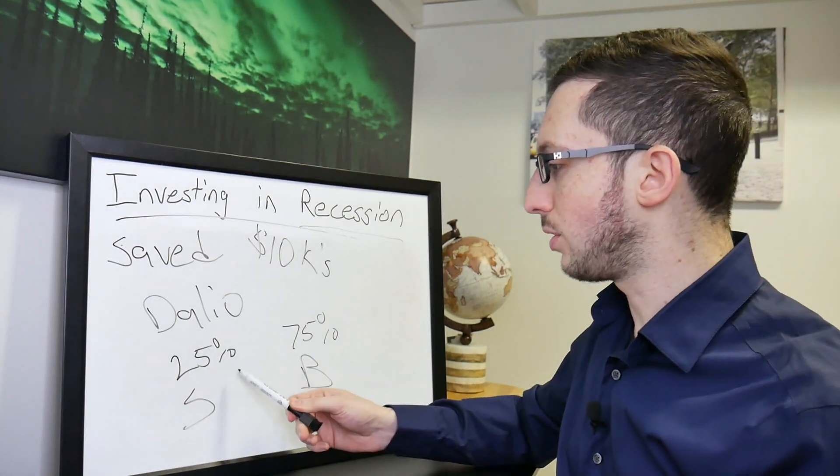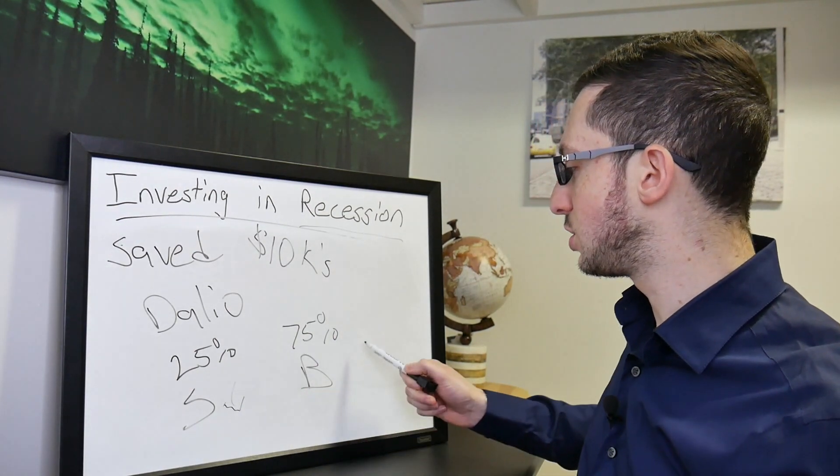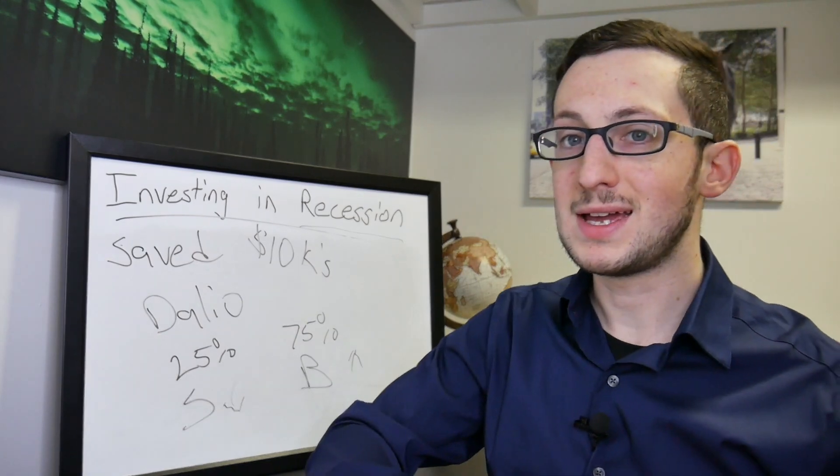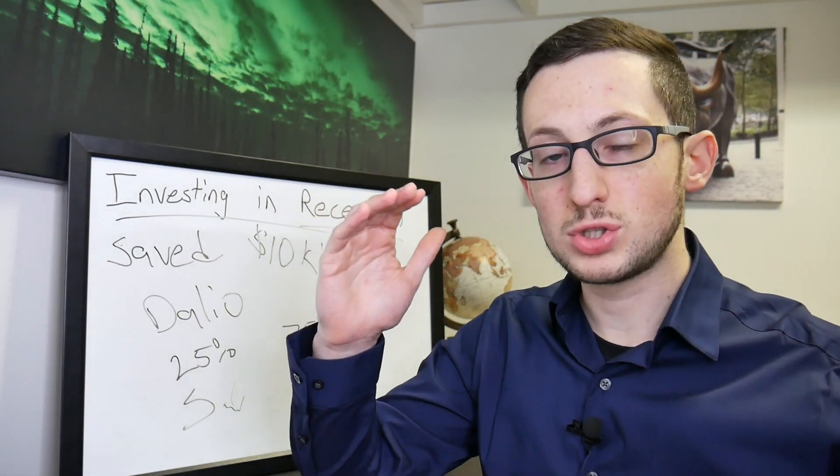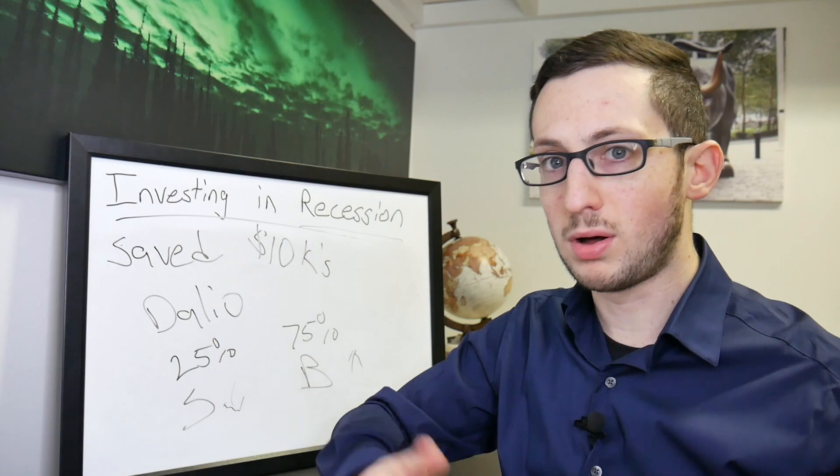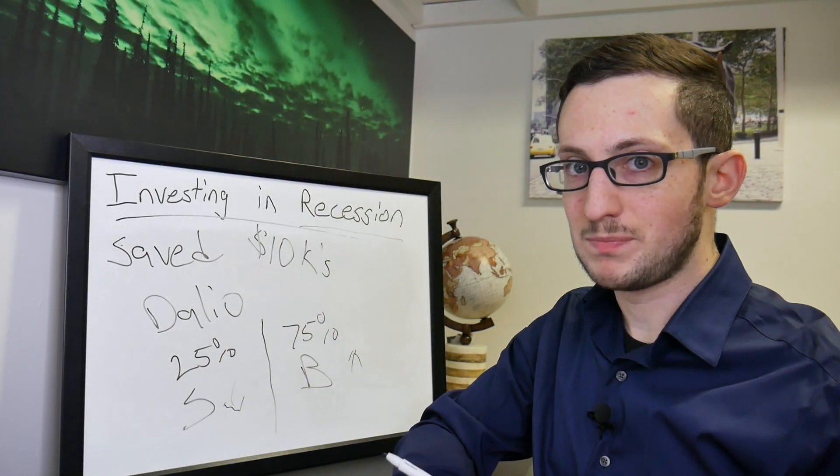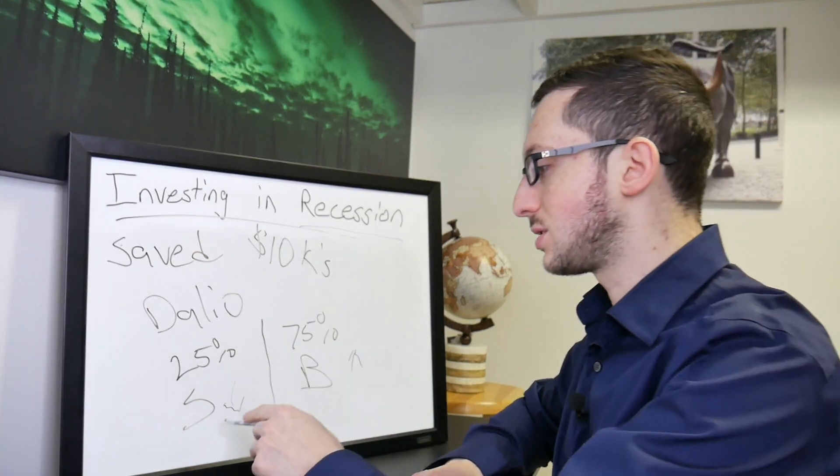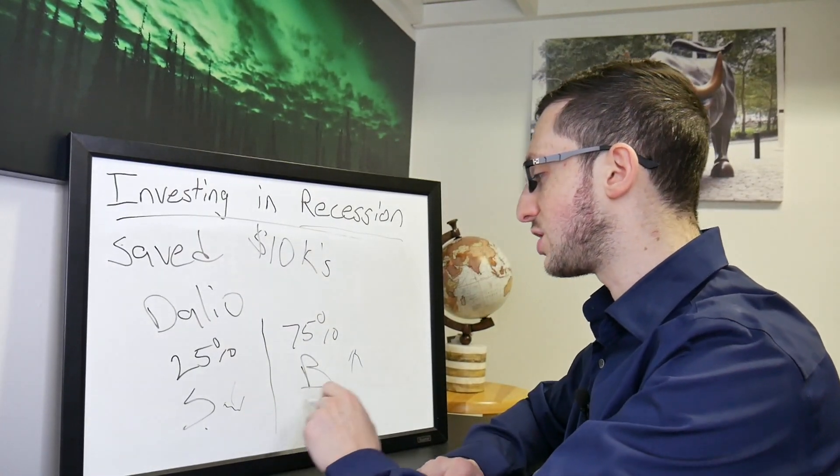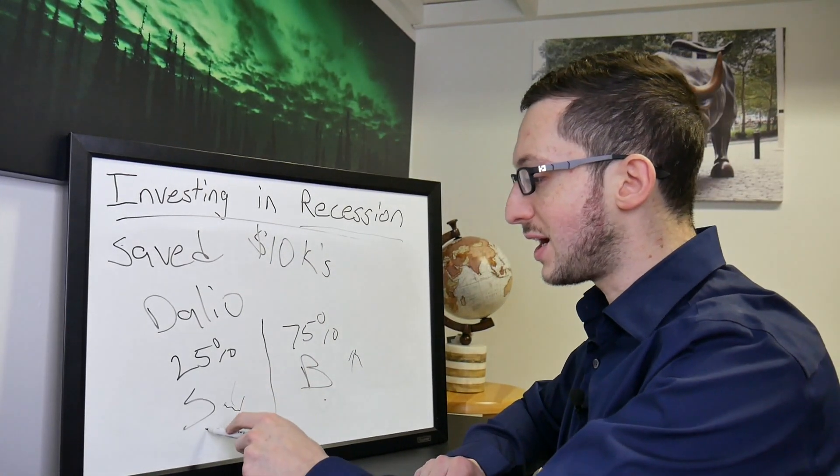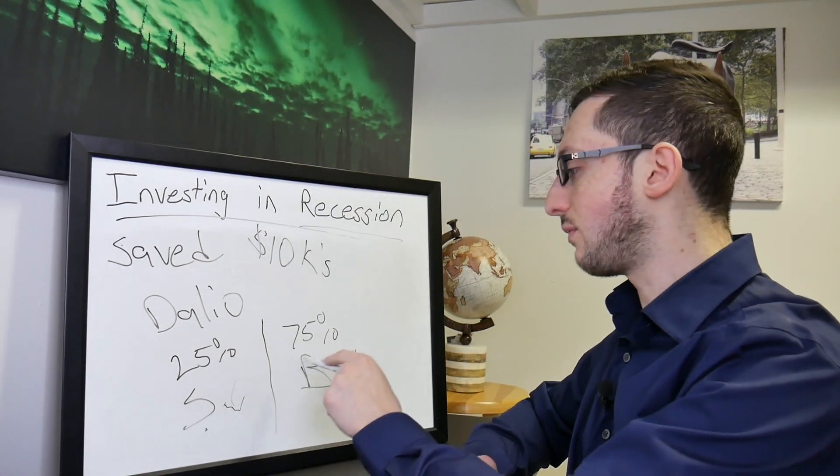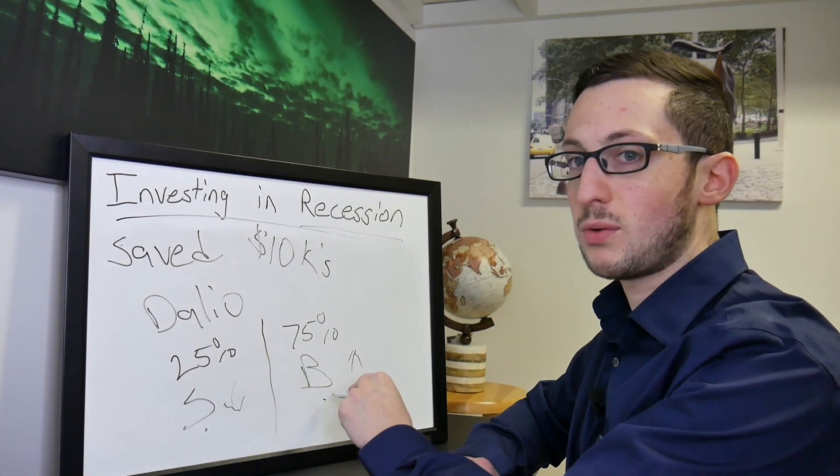And although stocks went down a bunch, the bonds held up and his portfolio didn't drop. It actually didn't drop at all because of that risk management. You really have to look at that because like we said before stocks are much more risky than bonds. So this got hit hard but since you have a lot more in bonds that went up.